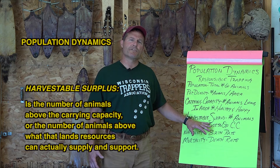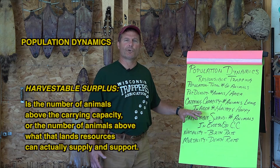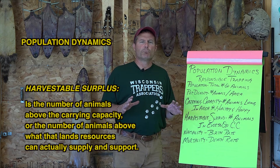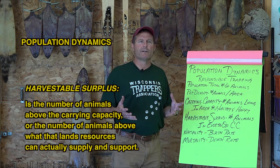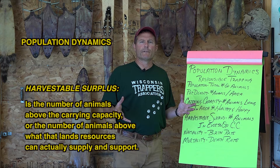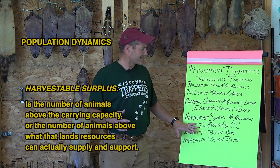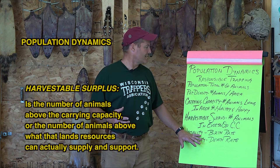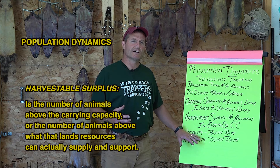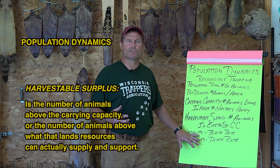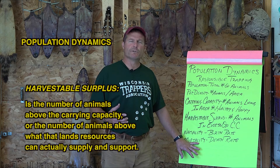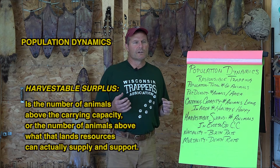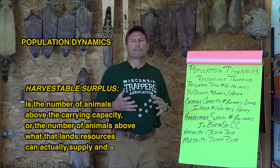Harvestable surplus is the number of animals above the carrying capacity. Going with raccoons: if there are 10 raccoons on 40 acres and that's the carrying capacity, but because of the birth rate we've got 30 coming into fall, the harvestable surplus — the number in excess of carrying capacity — would be 20 raccoons. The population density and the population itself are contingent upon the natality rate, which is the birth rate, and the mortality rate, which is the death rate. Both of those are affected by space, food, cover, shelter, predation, disease, and things like that.